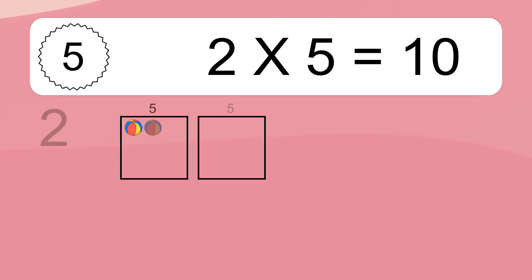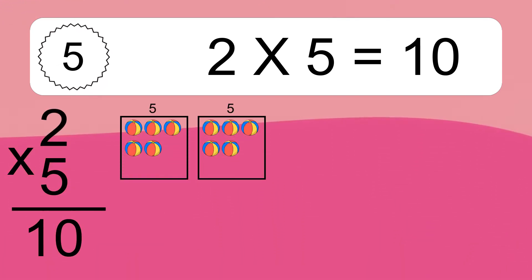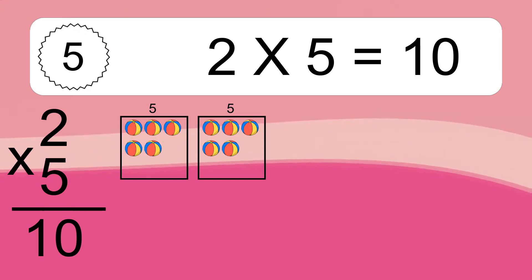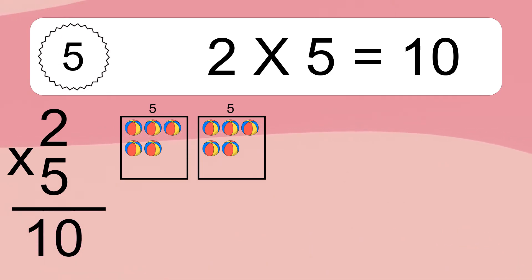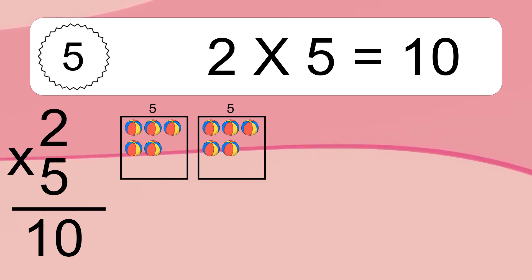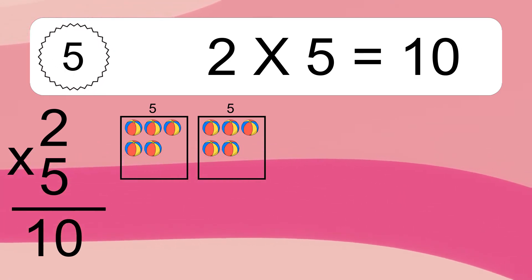2 times 5 equals what? 2 times 5 equals 10. We have 2 boxes, and each box has 5 colorful balls inside. If you count all the balls in all the boxes together, you will have 2 times 5 balls. This equals 10 balls.